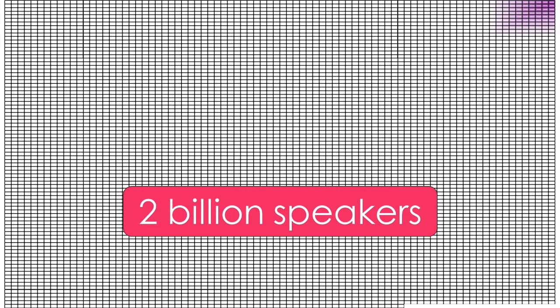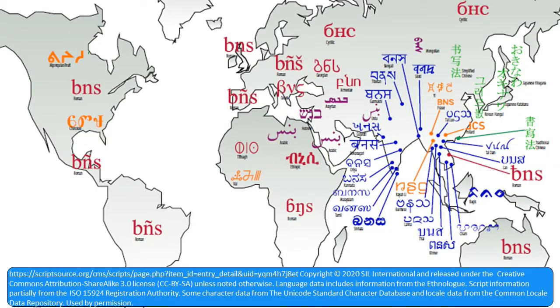For these 2 billion people, learning to read in their local language is the gateway to learning their own language for engagement with their community, and to eventually learning one of the top 100 languages for engagement with the world. There are many different writing systems around the world, and even for a simple spelling game, the world's different writing systems present numerous challenges.